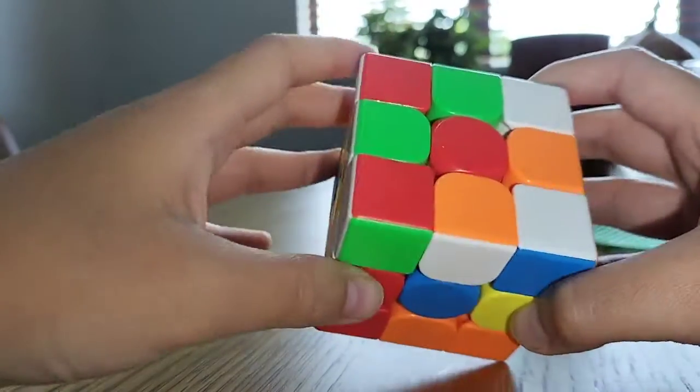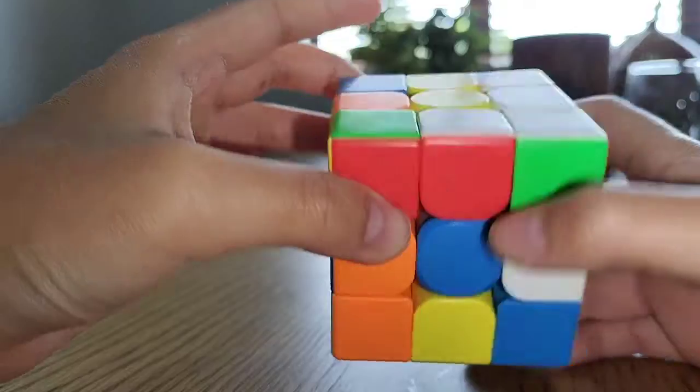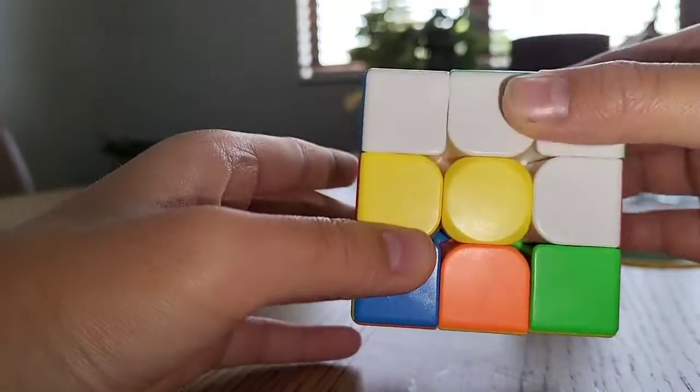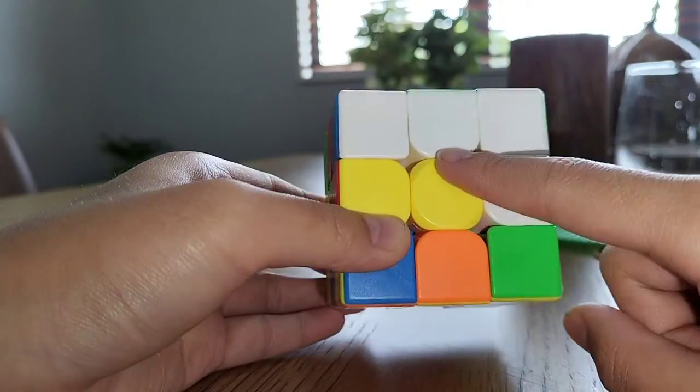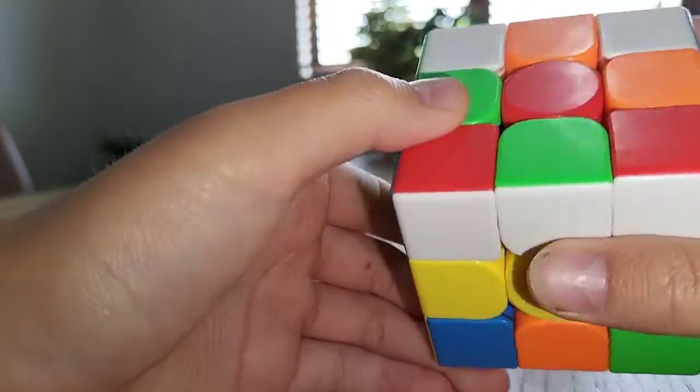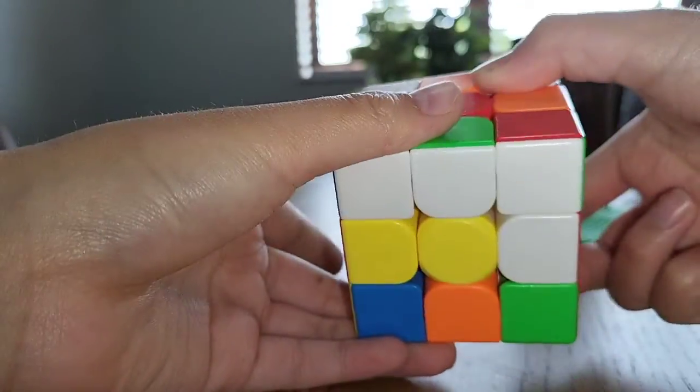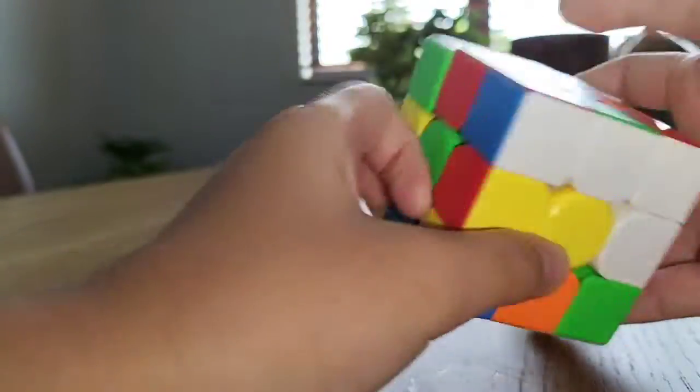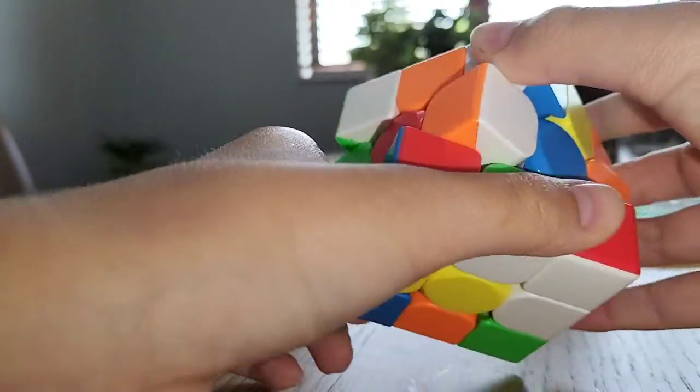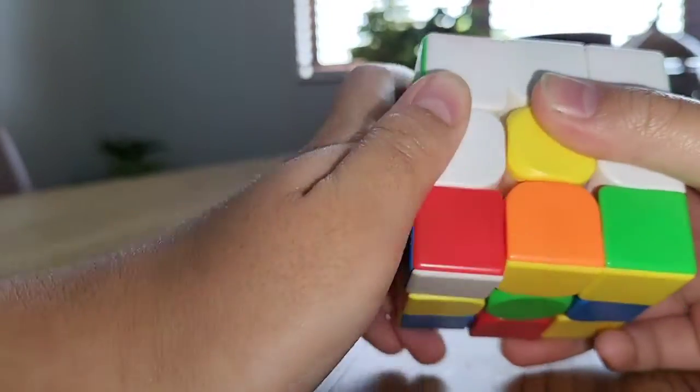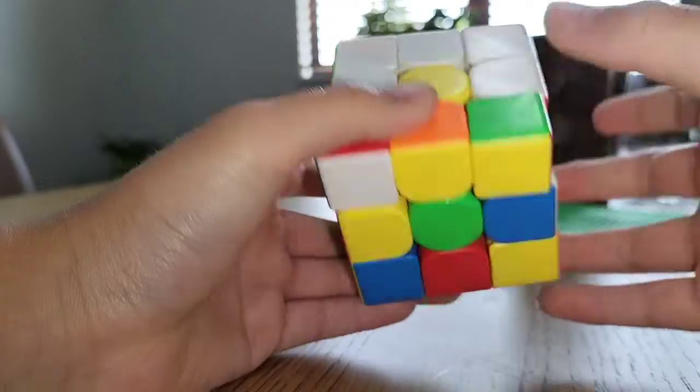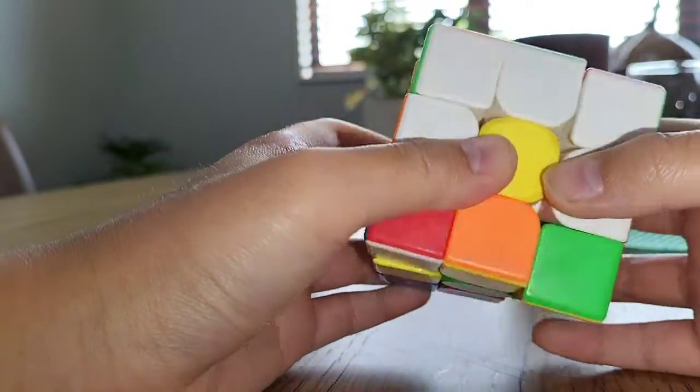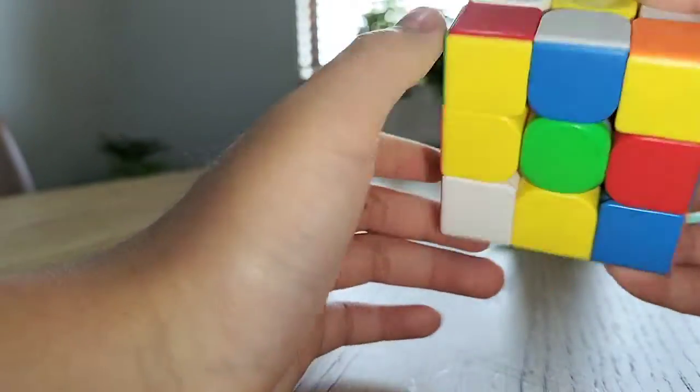So first you want to turn x, y, z. So it should be facing like this. Then you should do m for middle. Then put this down so you have this. Then white piece here.